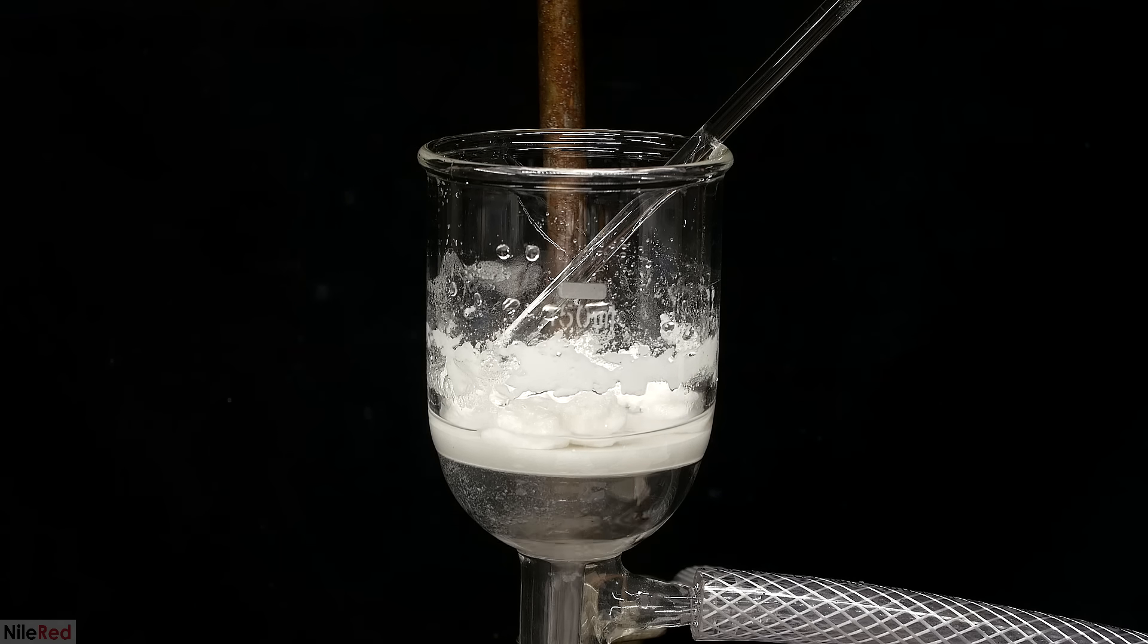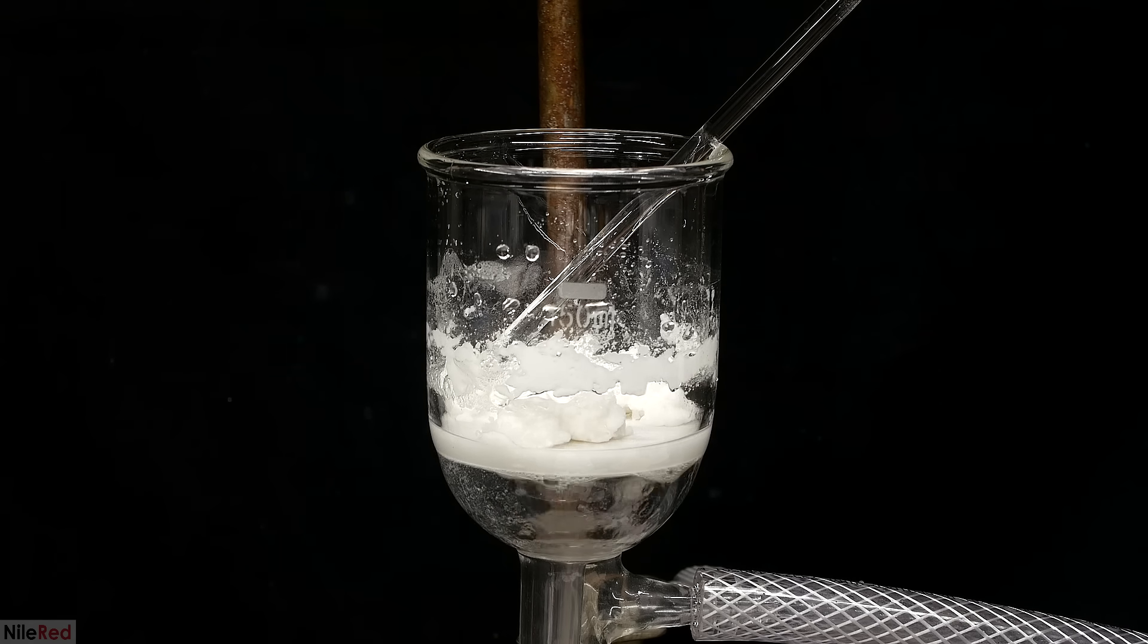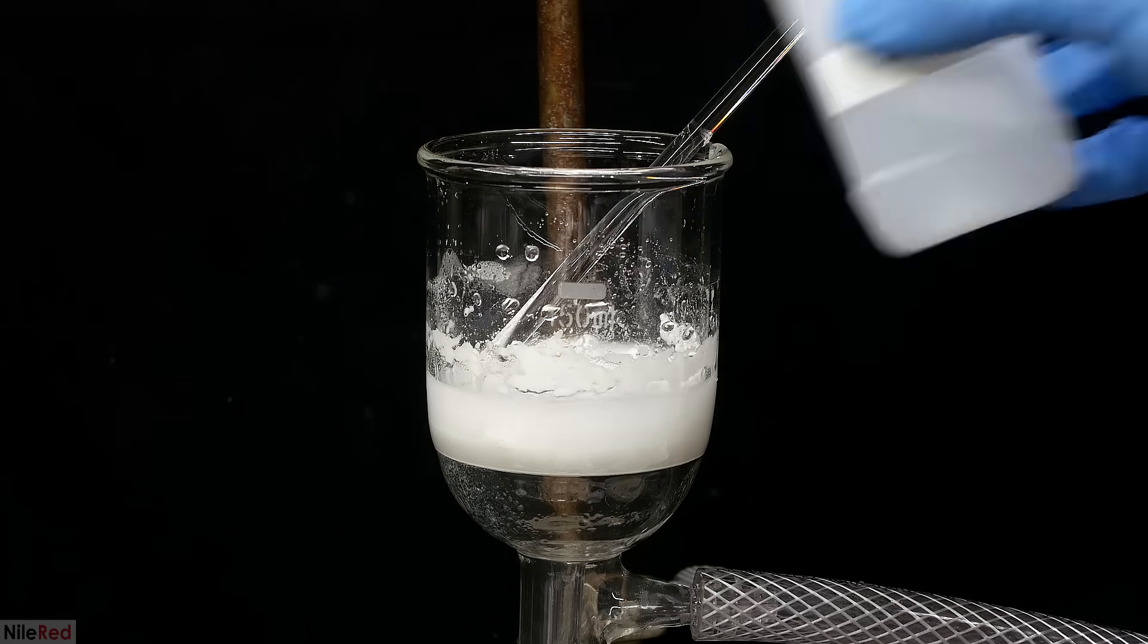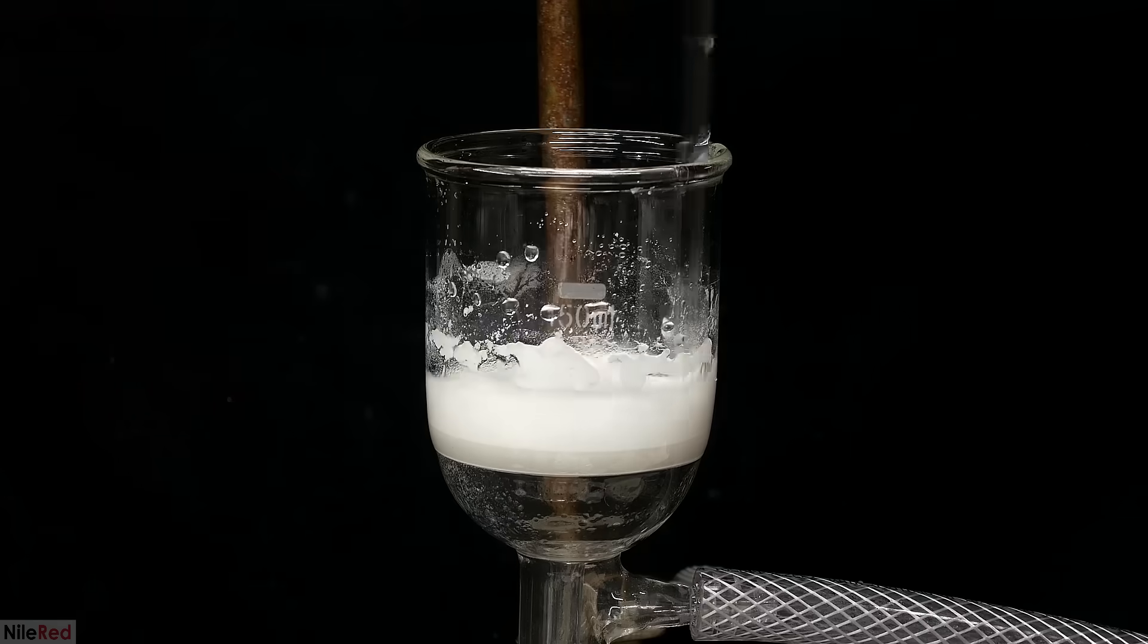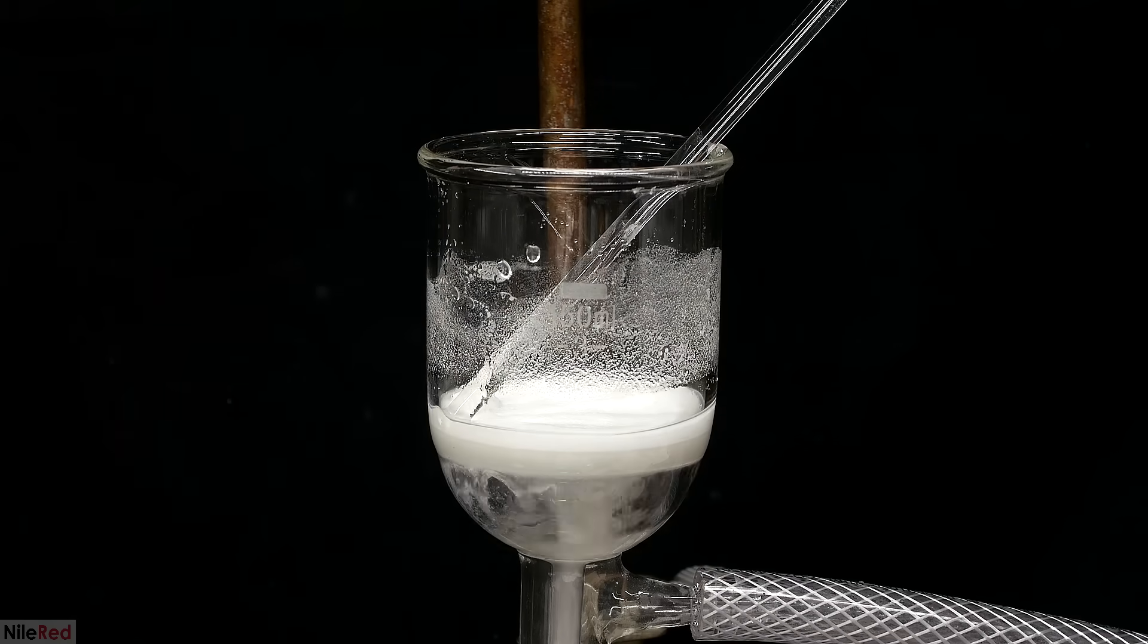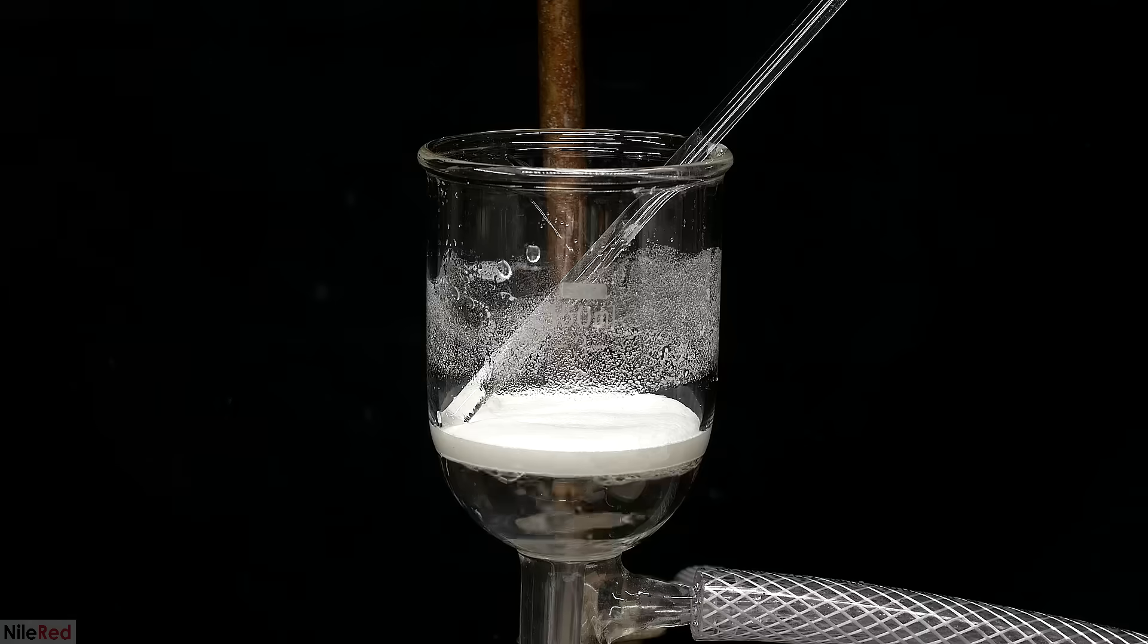After the water washings, the TCPO is a little bit damp and pasty, so to dry things up I used some methanol. I added just enough to completely cover things and then I gave it a thorough mixing. The methanol is pulled away and the TCPO I'm left with is a lot nicer.